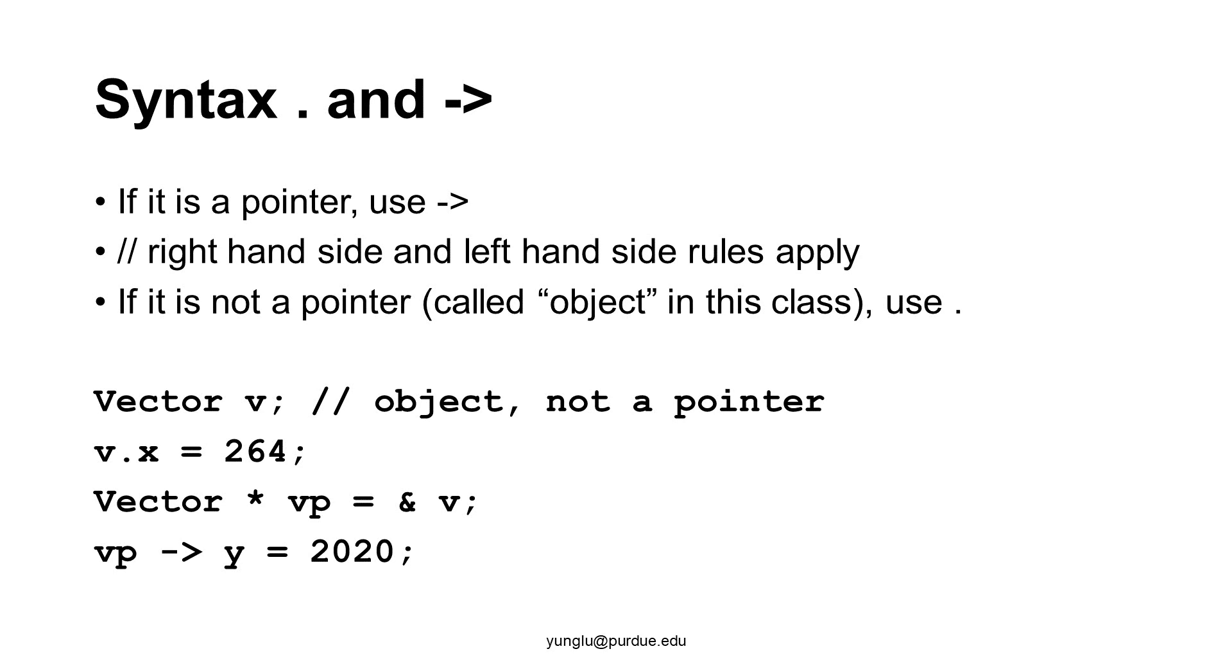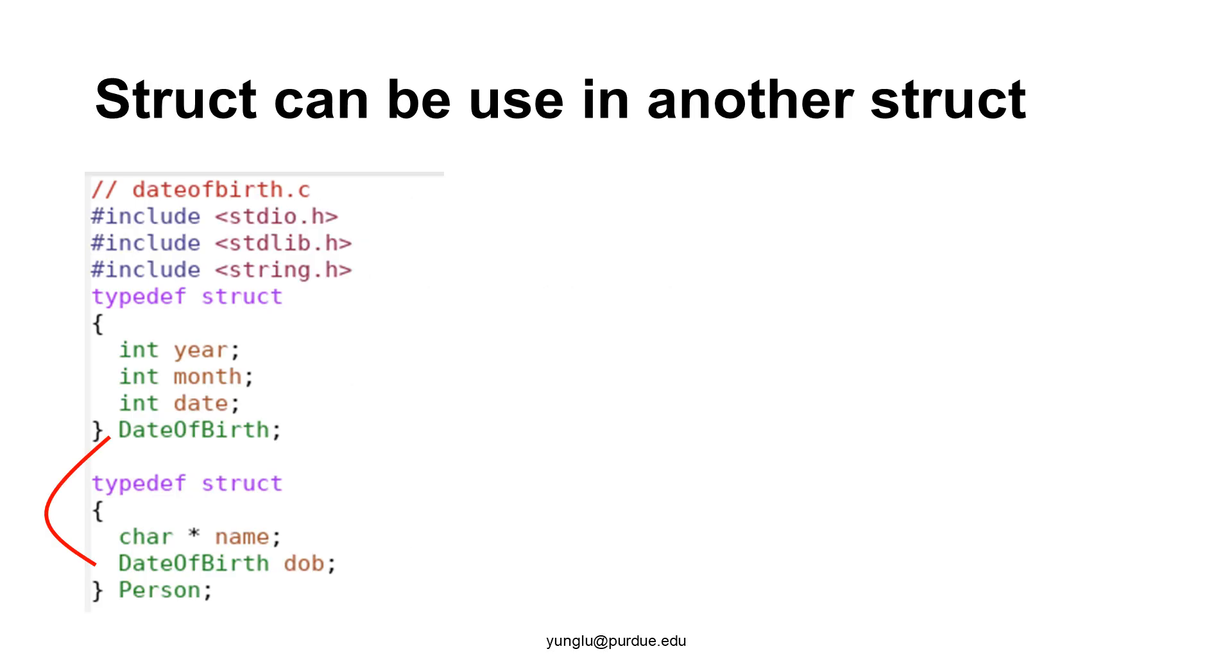We can also have a structure using another structure. This example creates a structure called date of birth. This structure has three attributes for year, month, and date. Another structure called person contains two attributes. The first is a pointer for name. The second is the date of birth structure. From this example, we can see that it is possible creating a structure using another structure.